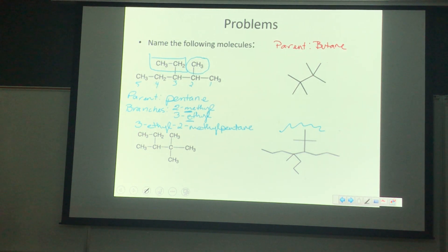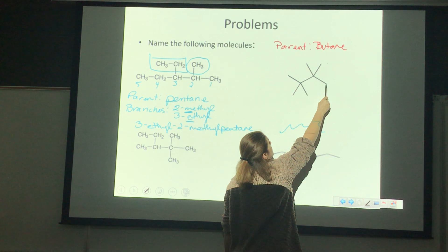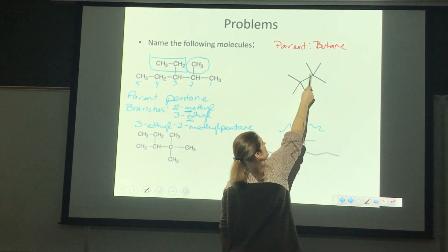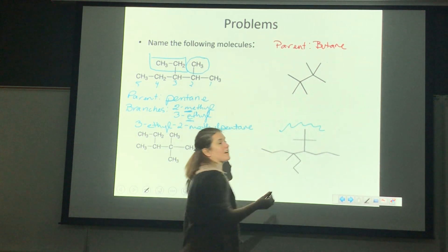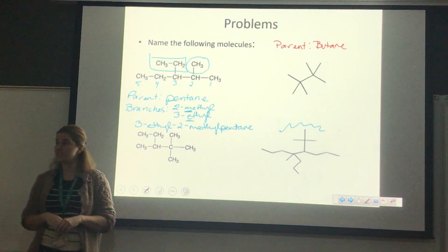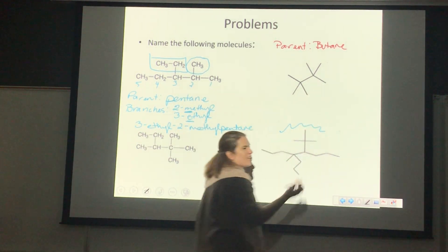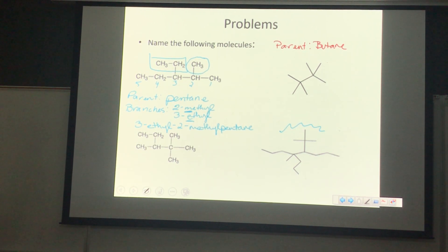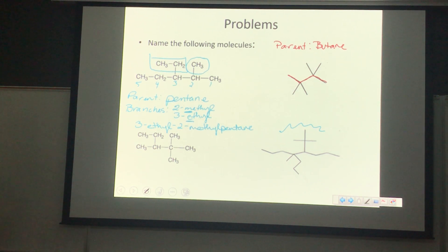Does anyone see another one that would have more than two branches? No? So do we want to go with the easy one right in the middle? The next thing we have to do is decide the numbering direction — do we want to number it left to right or right to left? We want to number it backwards because our first branch will come on the second carbon. If we numbered it forwards, our first branch would be on the third carbon. So our parent chain is pentane.